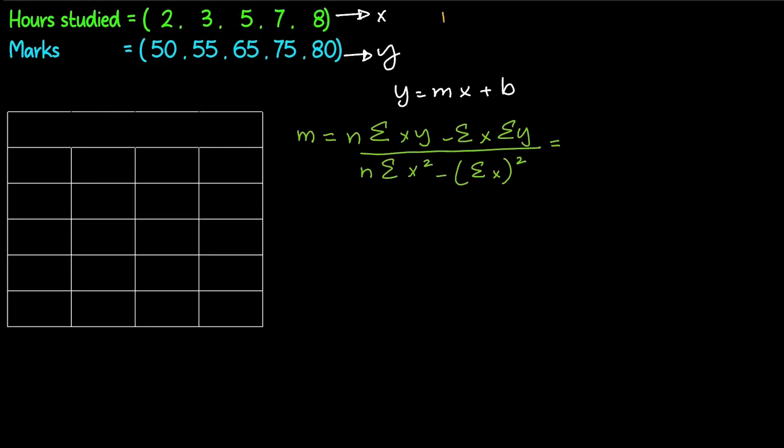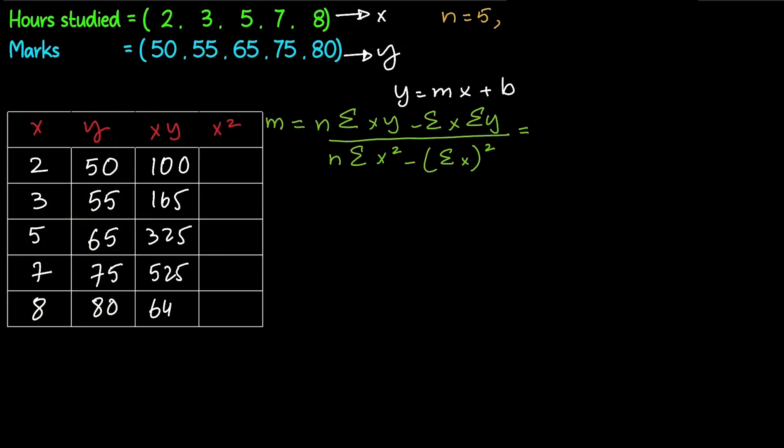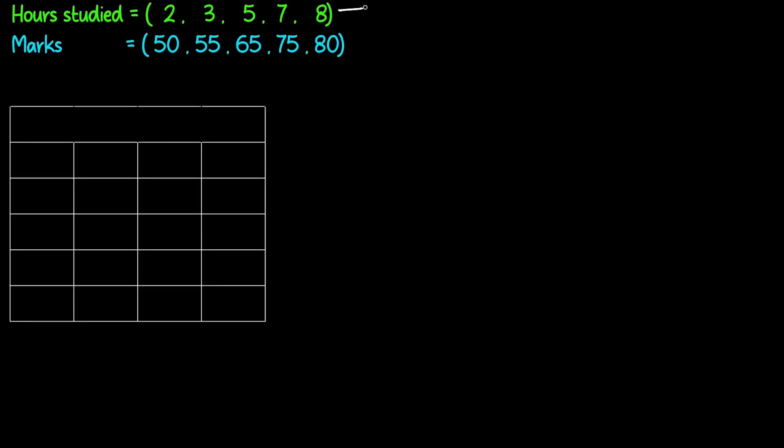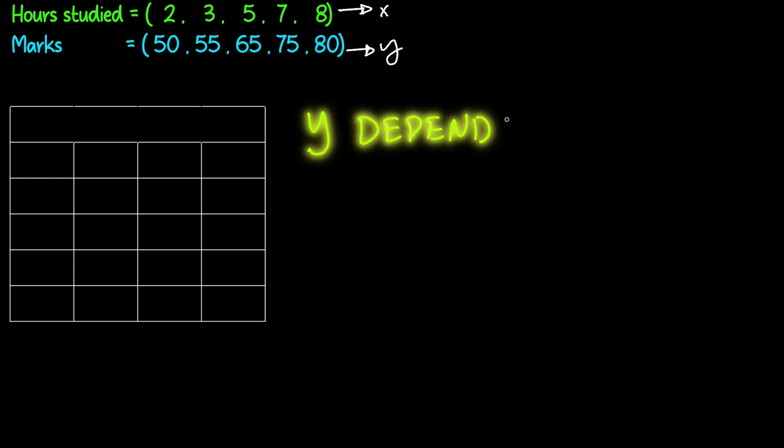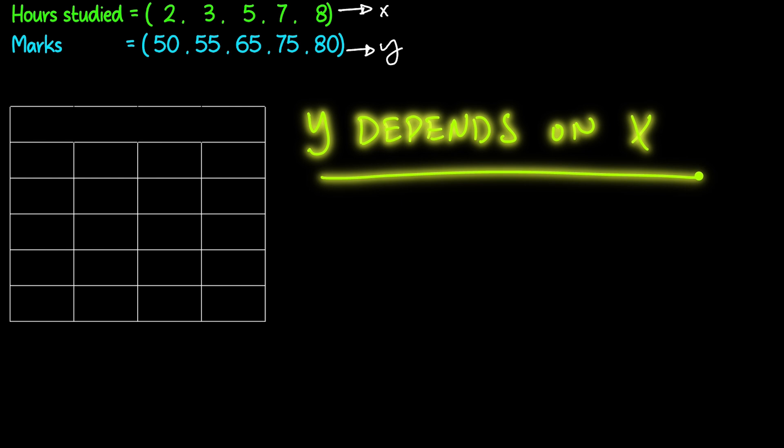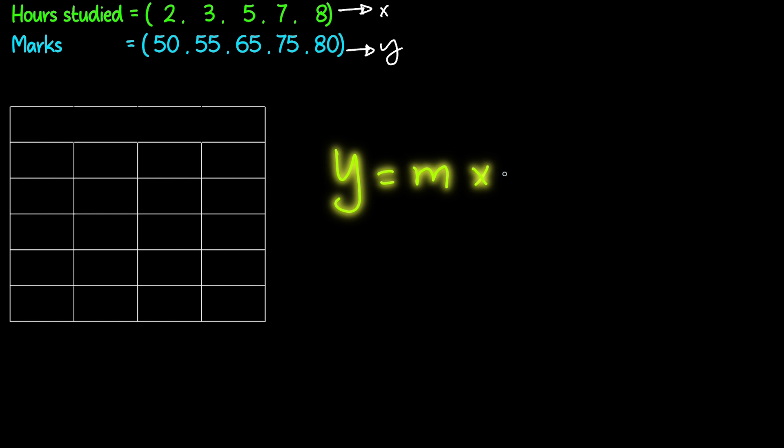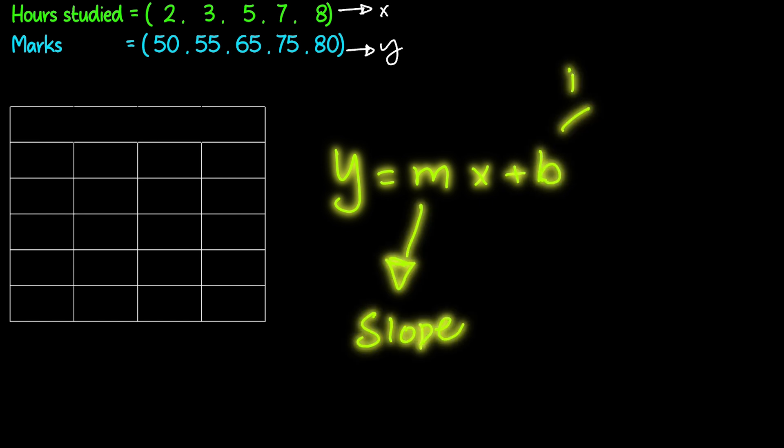In this video, we will find linear regression by the least square method. In linear regression, there is a dependent variable called y and an independent variable called x. Y always depends on x. In our dataset, marks will be dependent on how many hours the student studies. The main formula for linear regression is y = mx + b, where m is slope and b is intercept. The two components that need finding are m and b.